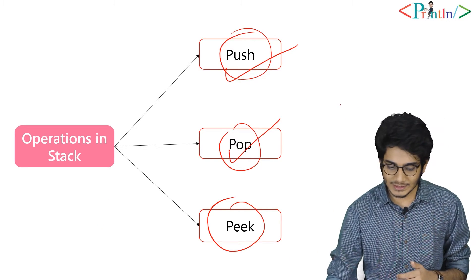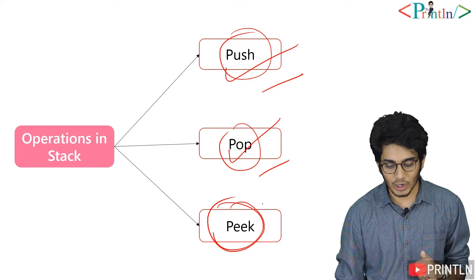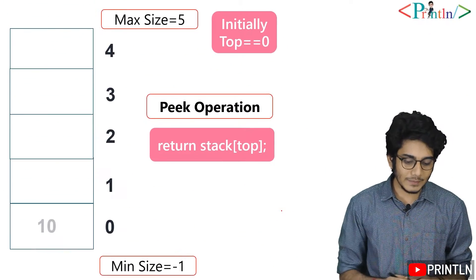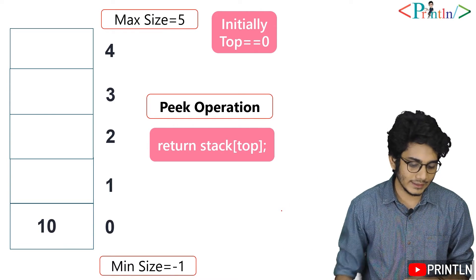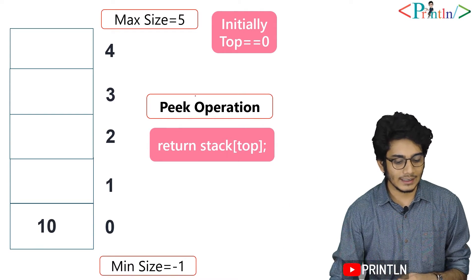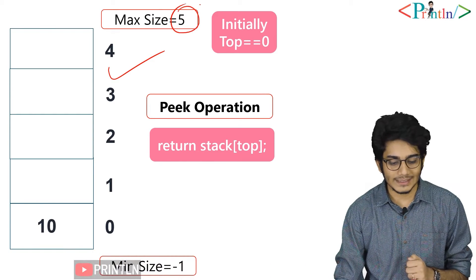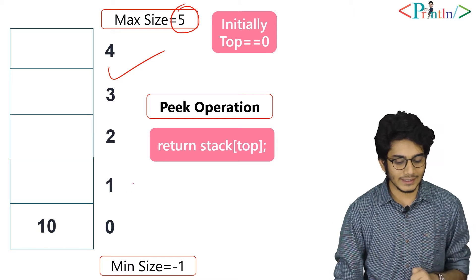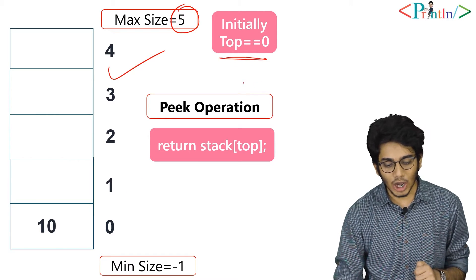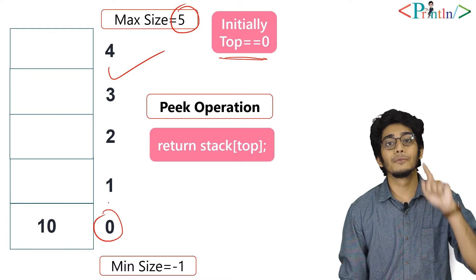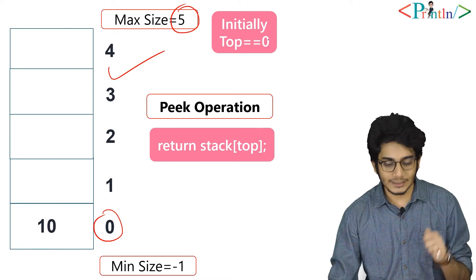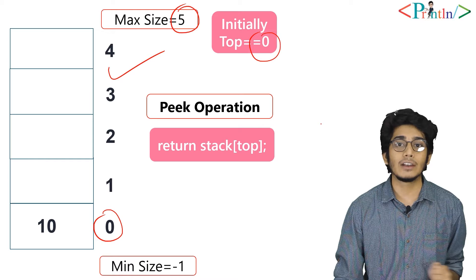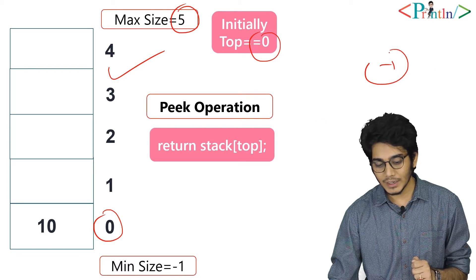We have already discussed about push and pop; now we'll talk about pick. Pick function is very easy. The size of the stack is 5. Initially, what is the top value? The value of top is 0 because we have only one value within our stack. If we don't have any value within a stack, then the value of top will be minus 1.